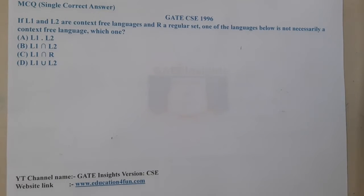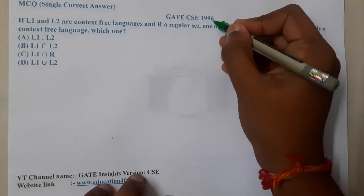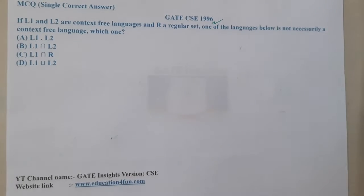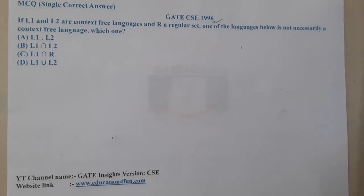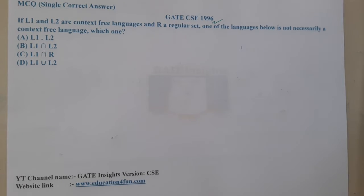Hello guys, we are back with our next lecture. This question belongs to GATE CSC 1996. The given question is: if L1 and L2 are context-free languages and R is a regular set, one of the languages below is not necessarily context-free.